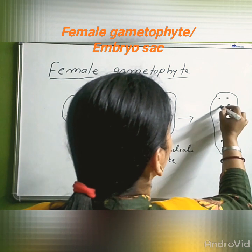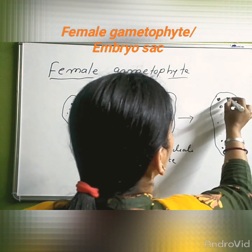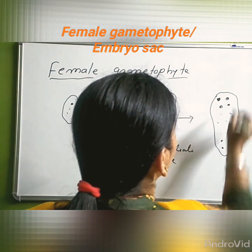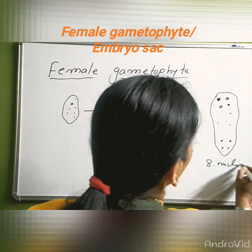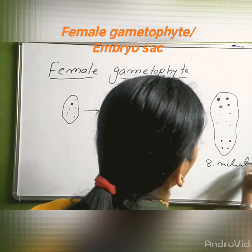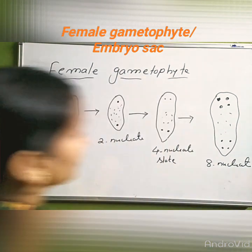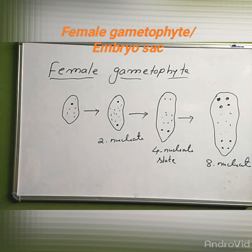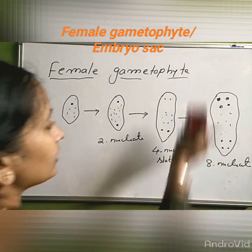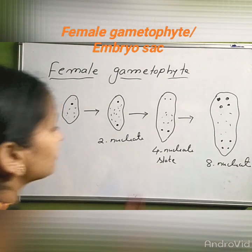After completion of the formation, we can see the eight-nucleate state. This stage is called the eight-nucleate state.